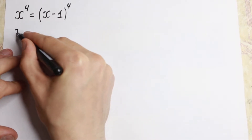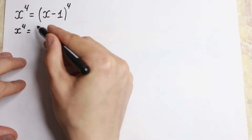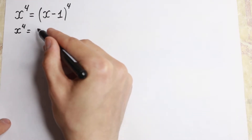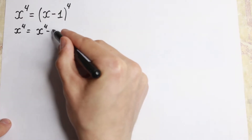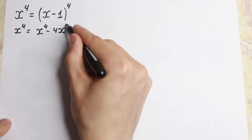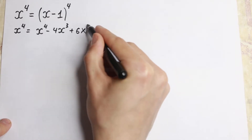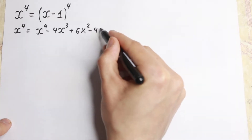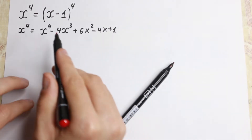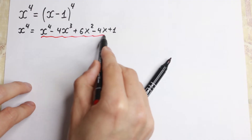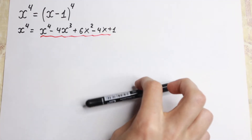On the left hand side we have x to the fourth power equal to, and using the binomial theorem, we get x to the fourth power minus 4x cubed plus 6x squared minus 4x plus 1. This is the binomial theorem — we just raise (x minus 1) to the fourth power.